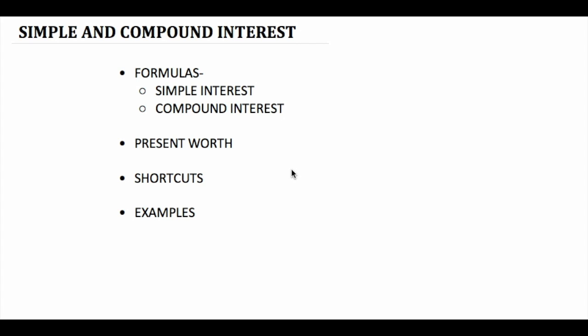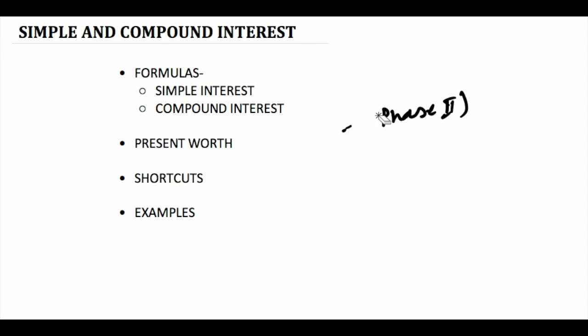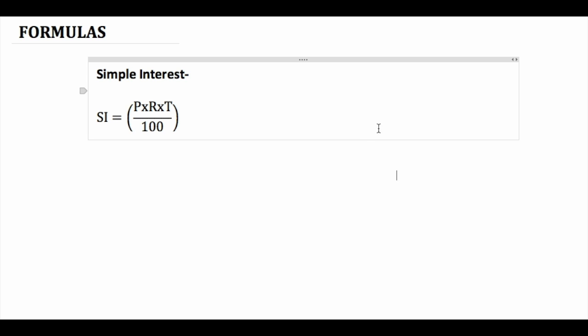In this video we are going to talk about simple and compound interest. The following things will be covered: number one, the formulas of simple interest and compound interest; secondly, present worth, very briefly; third, the shortcuts — this is the most important part of the entire video — we'll be talking about three major shortcuts; and lastly, we'll understand these shortcuts through three examples.